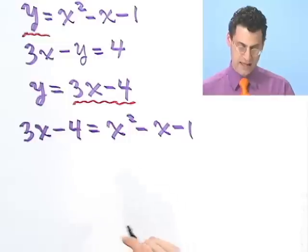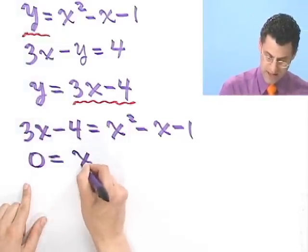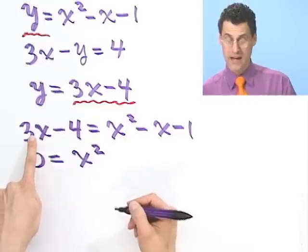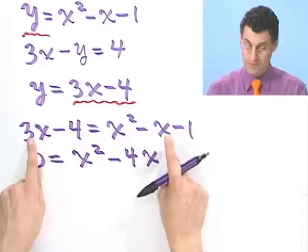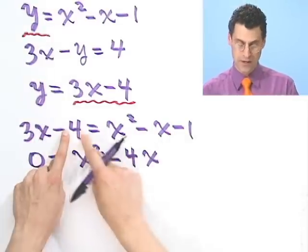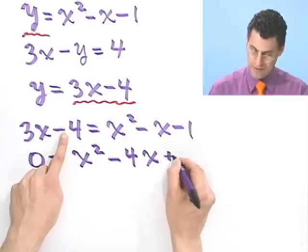So I'll bring everything over to the right-hand side, and I see that 0 equals x squared. Now I bring this 3x over, I subtract it, so it becomes a minus 4x, when I combine it with the minus 1x. This minus 4 becomes a plus 4, and a minus 1 is a plus 3.